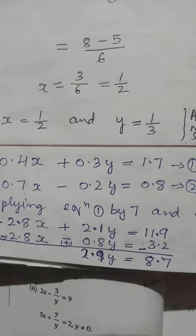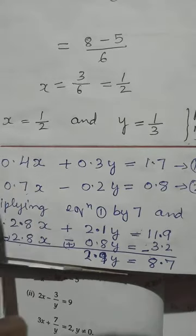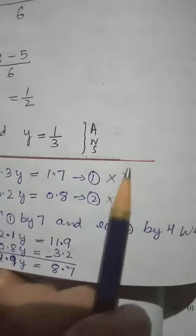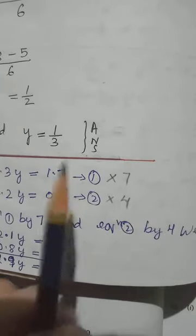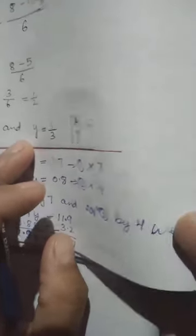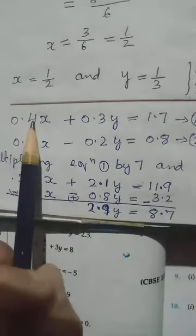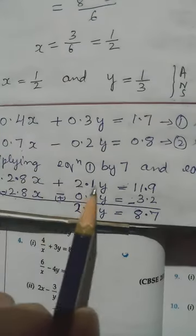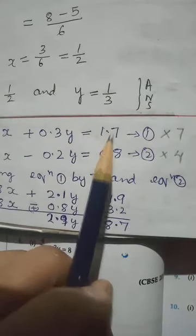Let us forget about the decimal; we will take only the number. For equation 1, I will multiply with 7. Then equation 2, I will multiply by the coefficient of X from equation 1, that is by 4. From where do I get this 7? Coefficient of X from equation 2. From where do I get this 4? Coefficient of X from equation 1. So, 7 into 0.4 will have 2.8 — one number after decimal. 7 into 0.3 gives 2.1. 7 into 1.7 gives 11.9 — one number after decimal. Then 4 into 0.7 gives 2.8.